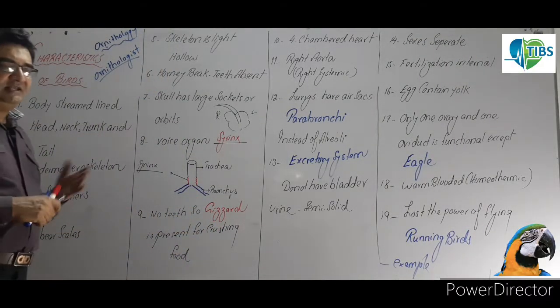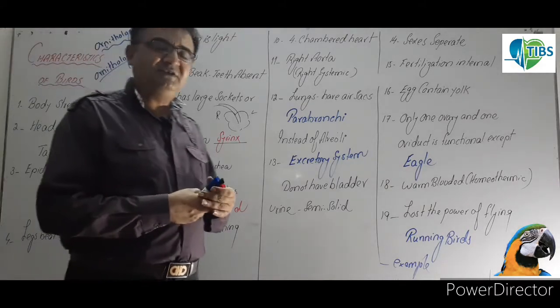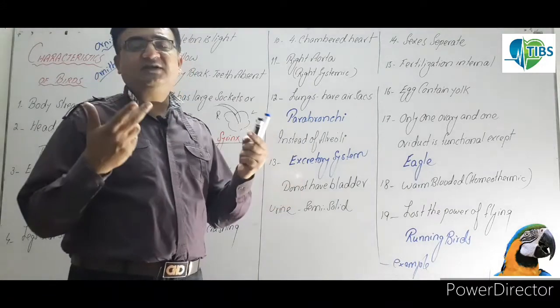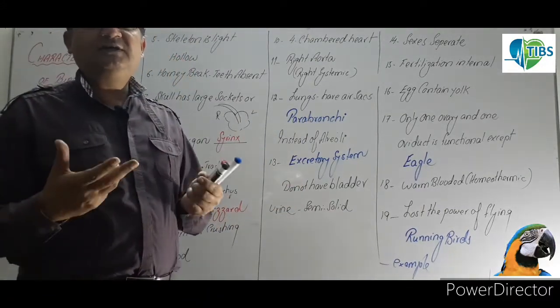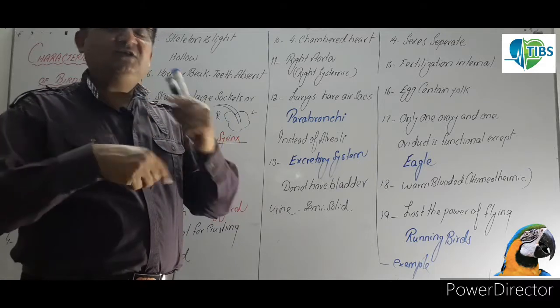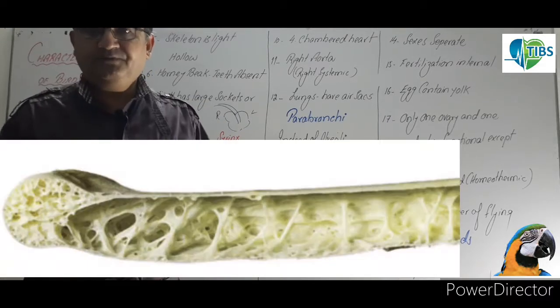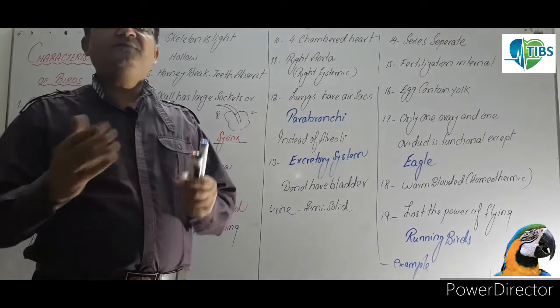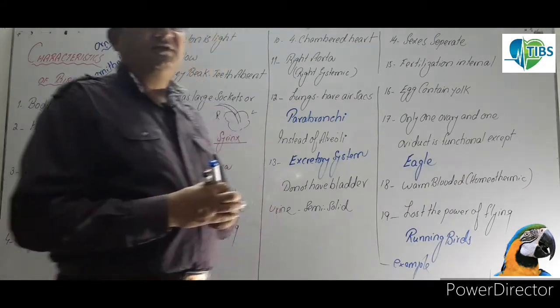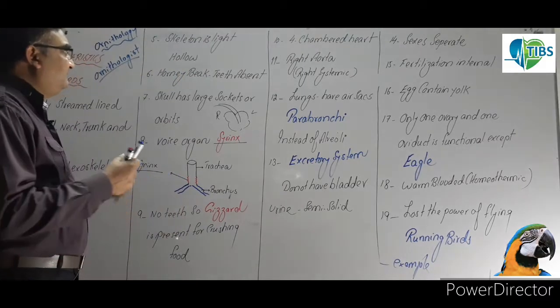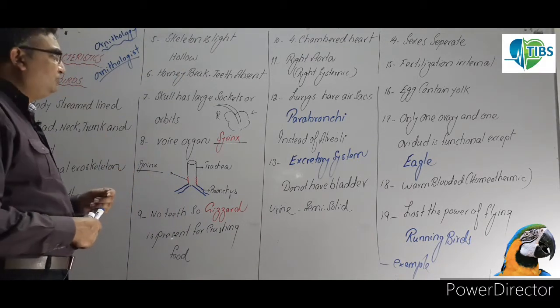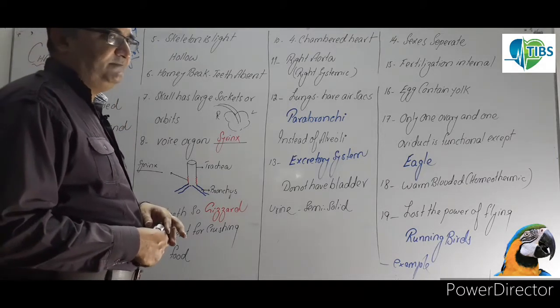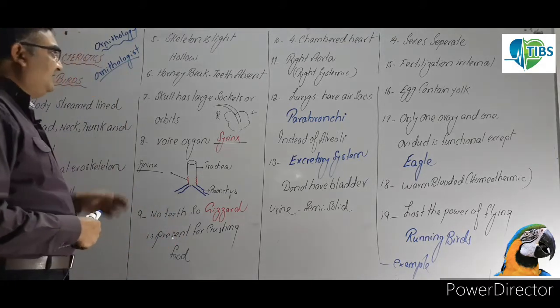Skeleton is light because they need to fly in the air. So to reduce their body weight, first their bones are hollow. Second, their number of bones is also reduced so that their weight is less and they can fly longer in the air. They have a horny beak and teeth are absent.